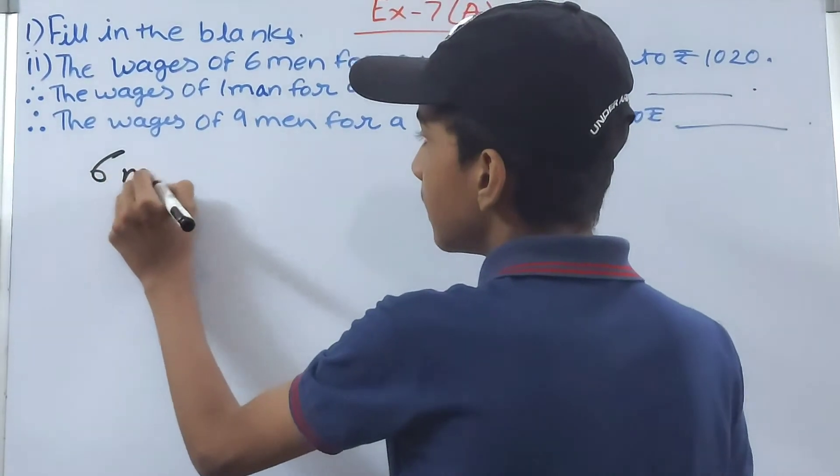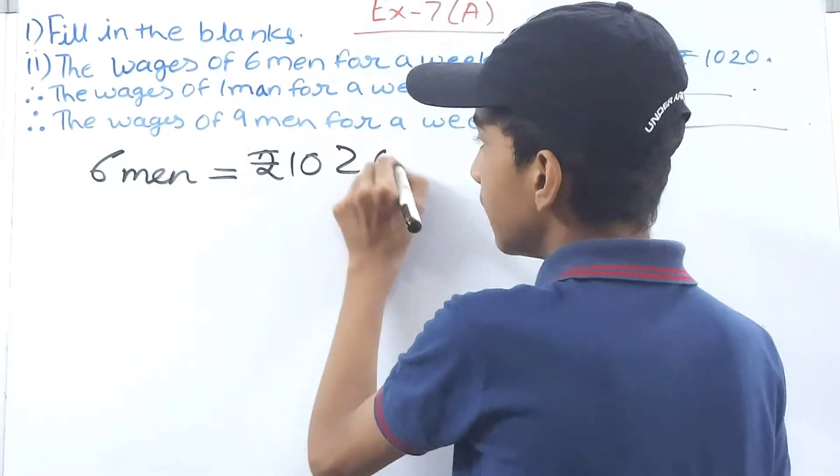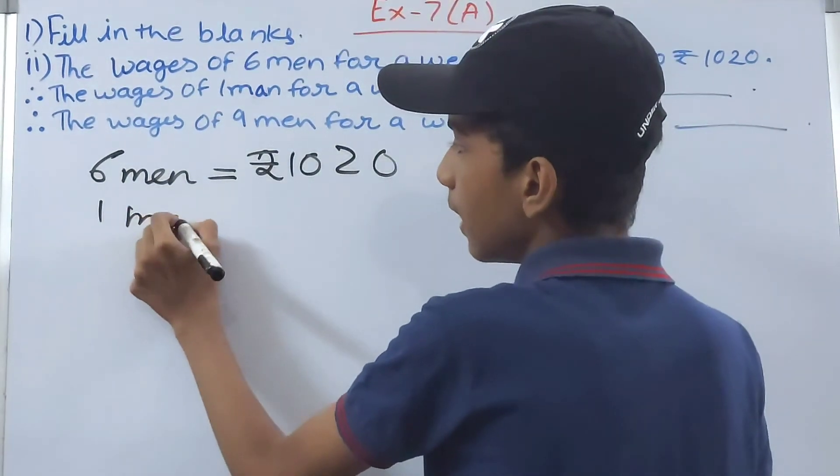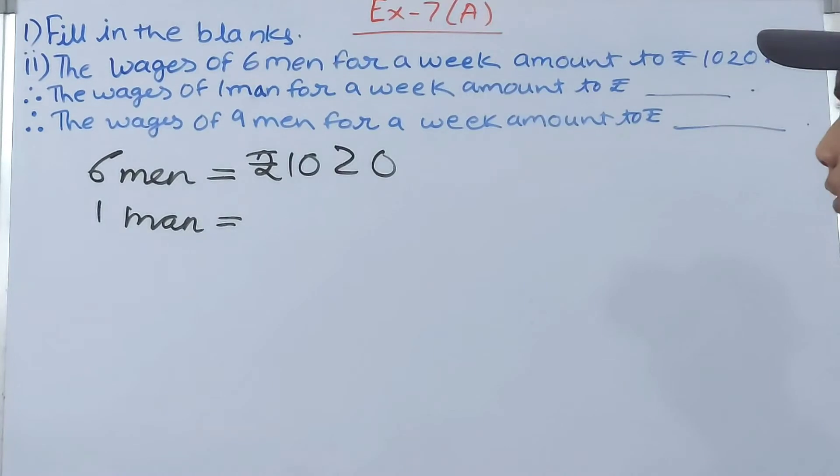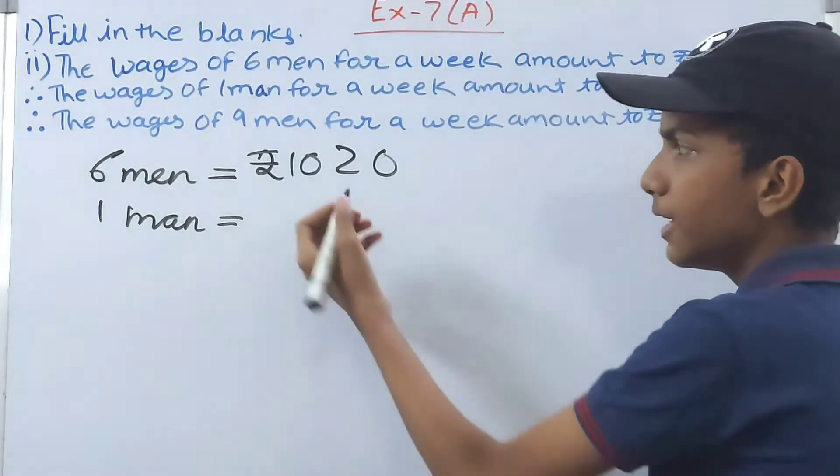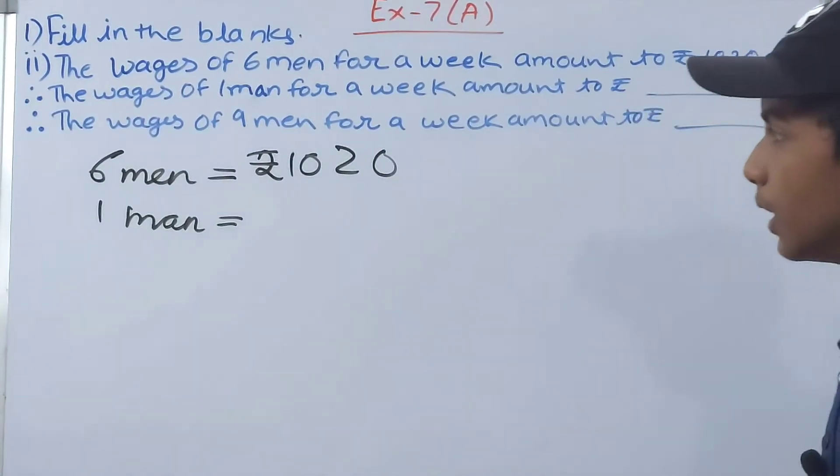So divide 1020 by 6. Rupees 1020 by 6. Cancel this, cancel this one, 42, 7 times, 0. So one man will have rupees 170 as the wage for one week. This will be rupees 170.